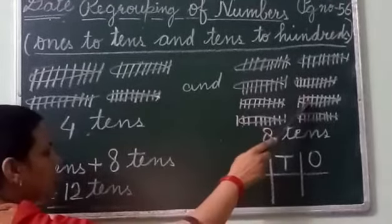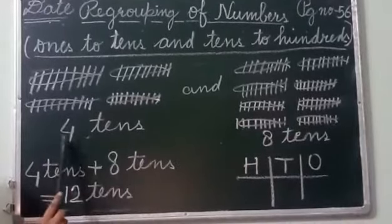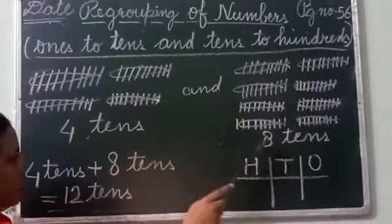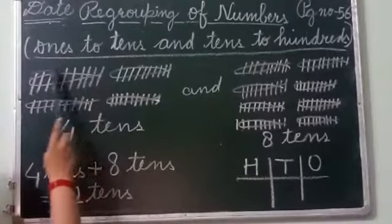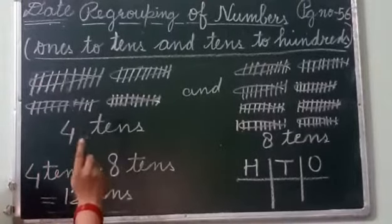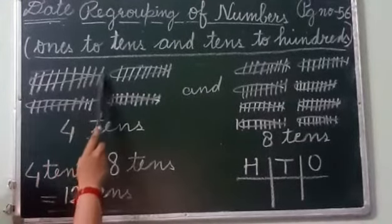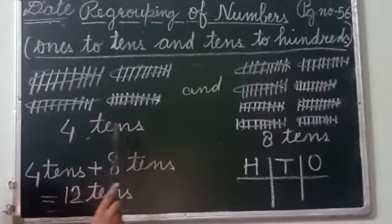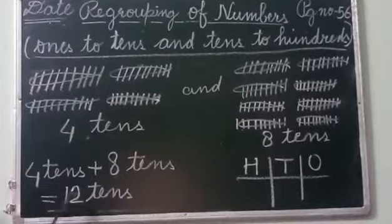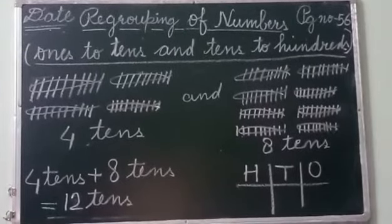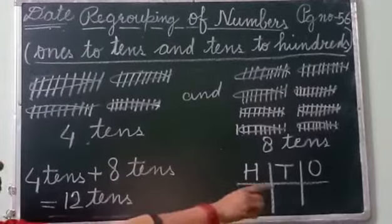So we have 1 ten, 2 tens, 3 tens, 4 tens, 5 tens, 6 tens, 7 tens, 8 tens — that's why we have written 8 tens. Now you have to add 4 tens and 8 tens. Both are tens because in each group 10 sticks are there. So 4 tens plus 8 tens gives you 12 tens.